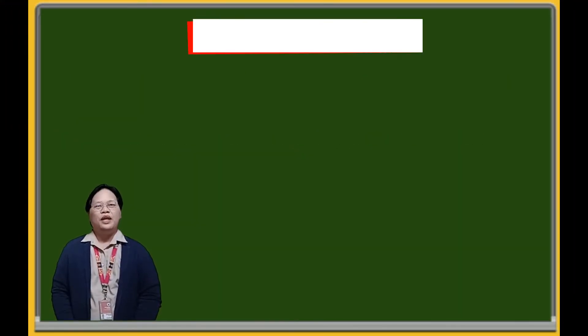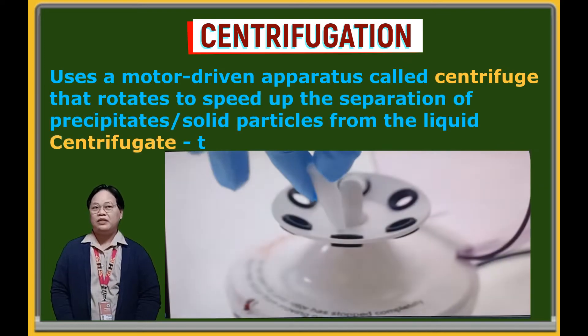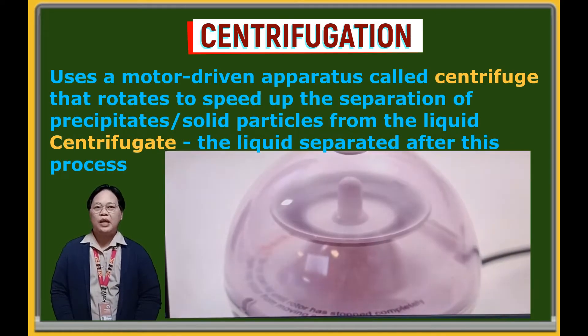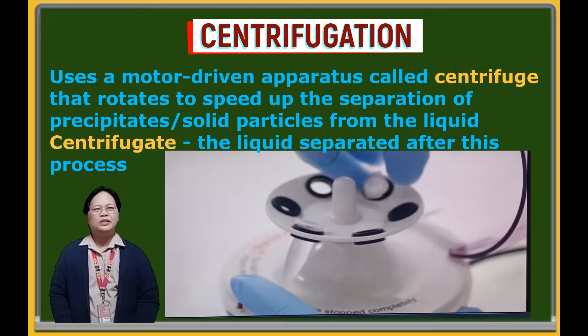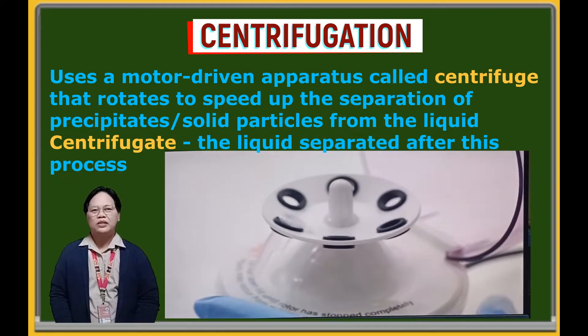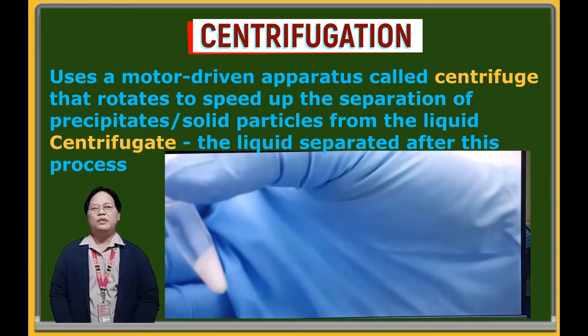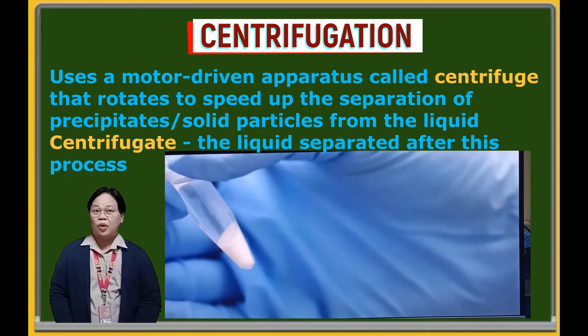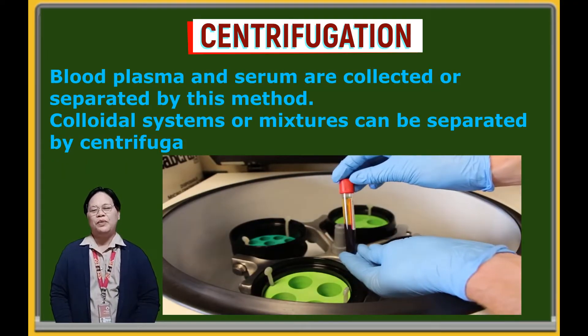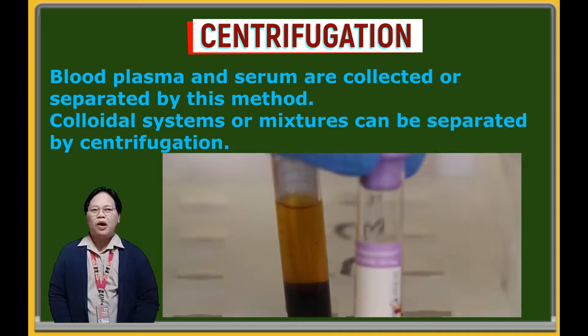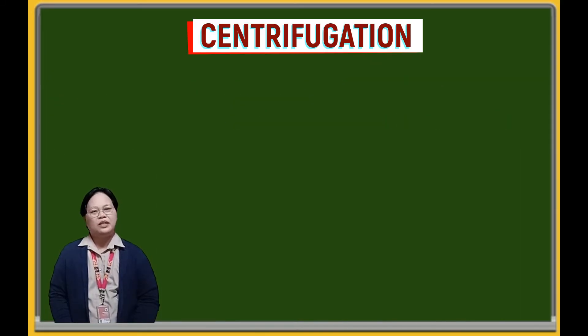Centrifugation. This process speeds up the settling of the precipitate and uses a motor-driven apparatus called a centrifuge. This rotation process brings the precipitate or solid particles to the bottom of the test tube. And then the supernatant liquid or centrifugate is poured off. Blood plasma and serum are collected using this process. In other words, colloidal particles can be separated using this process.